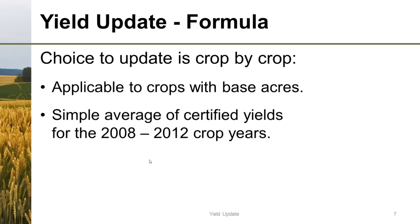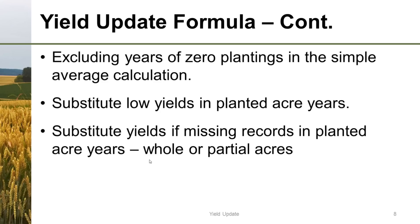If you choose to update, you can do so on a crop-by-crop basis, and it's the owner who has the opportunity to make this decision. The crop must have base acres. The yield is a simple average of certified yields for the 2008–2012 crop years, excluding zero plant years. If you decide you want to update one crop but not another, that's fine. It excludes years of zero planting in the simple average calculation, and it's not a weighted yield calculation, nor an Olympic average calculation.